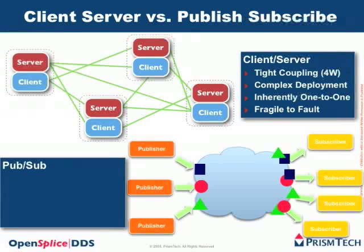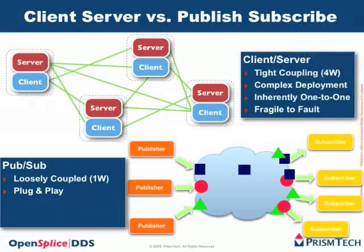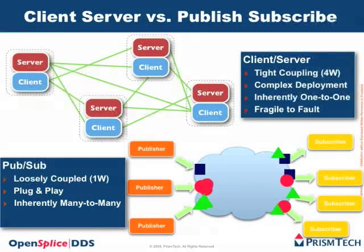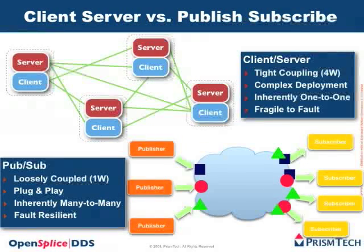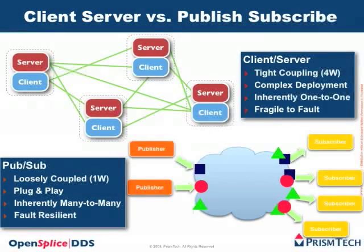PubSub is relatively different. To summarize key points: they lead to loosely coupled architecture because of only one W compared to four. They are plug-and-play — you just become a publisher, connect to the system, and the system will discover what you publish and deliver the data you produce to interested parties. They are inherently many-to-many, so many-to-many communication is managed as a first-class citizen. And they are very fault resilient — if a publisher crashes, no problem, the system continues to work. Perhaps certain data won't be produced, but as soon as the publisher comes back the system will resume as if nothing had happened.